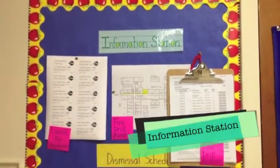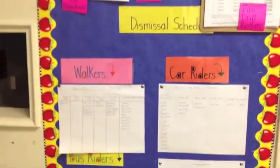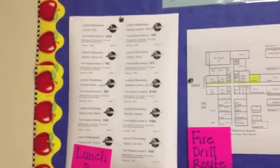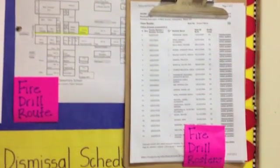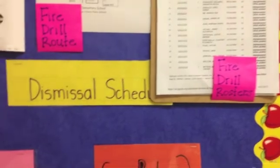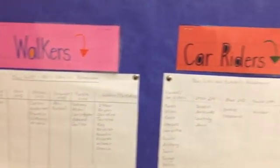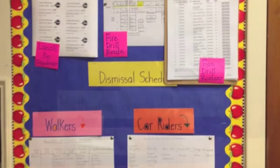Upon entry from the classroom door, visitors will find an information station which contains space for a map of the school, a highlighted emergency exit route, and copies of class lists on clipboards for attendance purposes in case of an emergency or practice evacuation. I enjoy having a space that is easily accessible and practical, which may also be used by other visitors in our classroom.